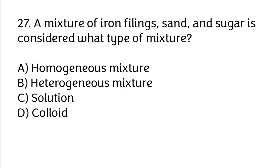A mixture of iron filings, sand and sugar is considered what type of mixture? A. Homogeneous mixture, B. Heterogeneous mixture, C. Solution, D. Colloid. Correct answer is B. Heterogeneous mixture.